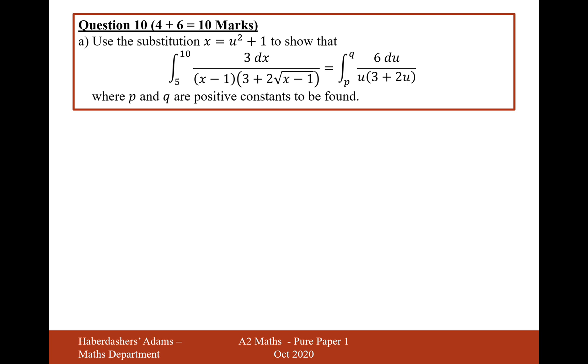So part A is use the substitution x equals u squared plus 1 to show that the integral from 5 to 10 of 3 dx over (x minus 1)(3 plus 2 root x minus 1) is equal to this expression on the right hand side where p and q are constants to be found.